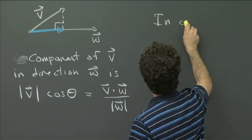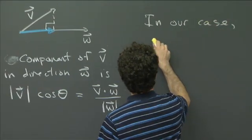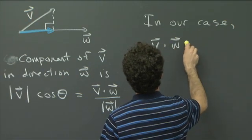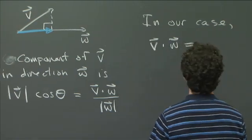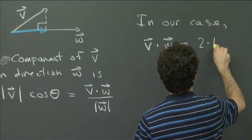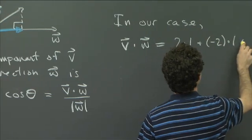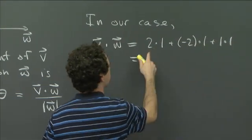So in our case, v dot w, well, that's straightforward because we're given v and w in coordinates. So this is just 2 times 1 plus minus 2 times 1 plus 1 times 1. So that's 2 minus 2 plus 1 is 1.